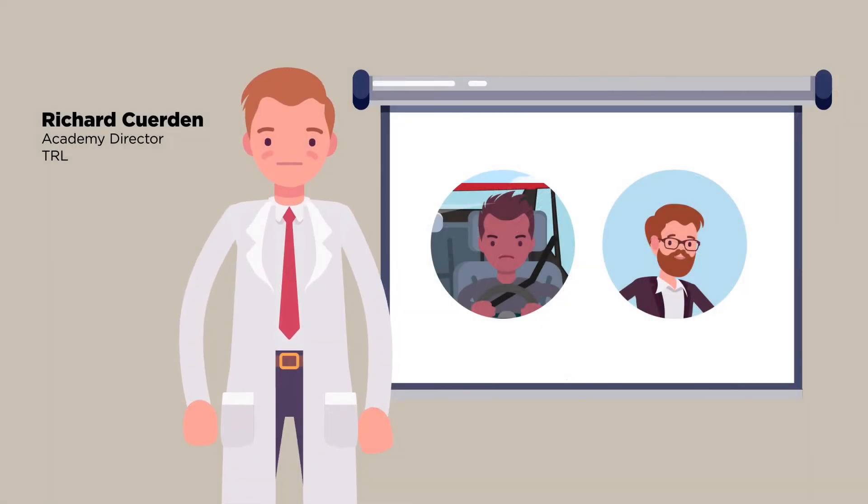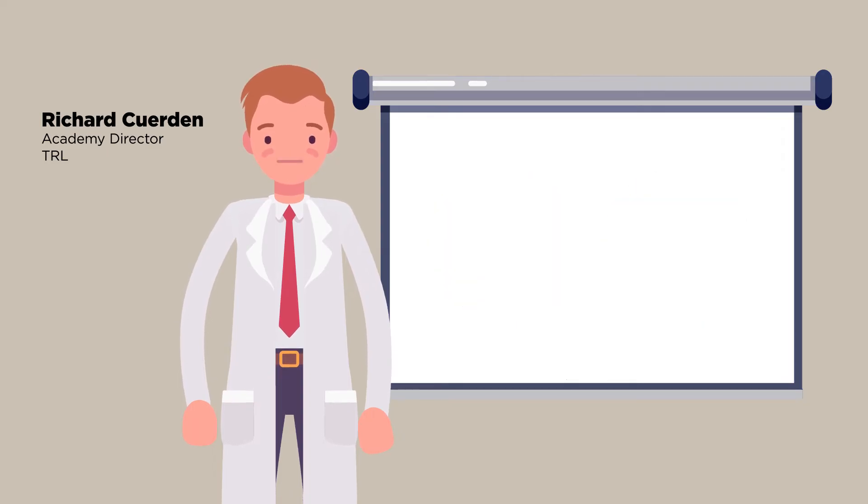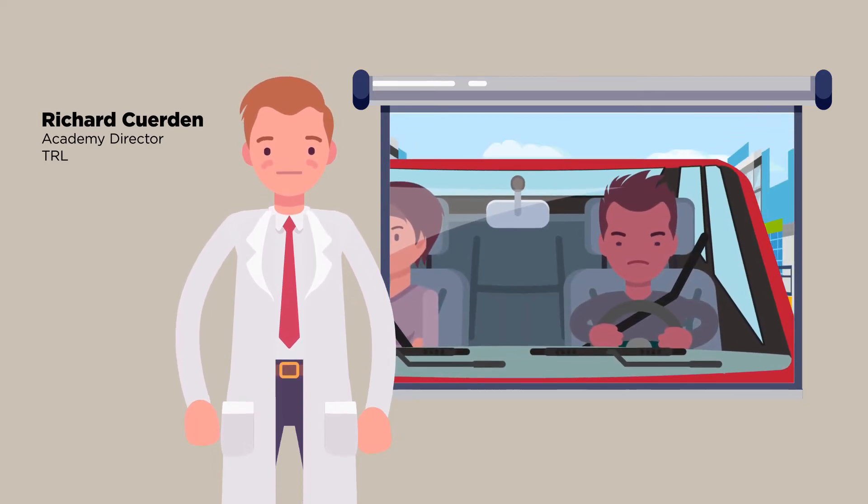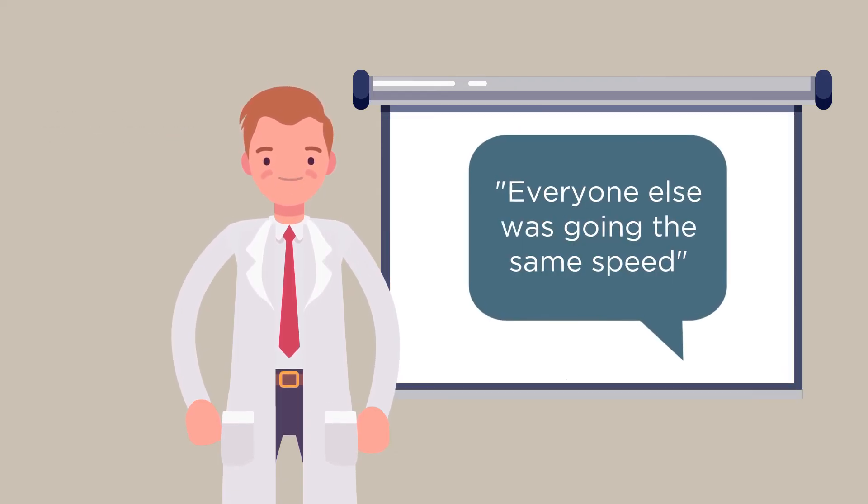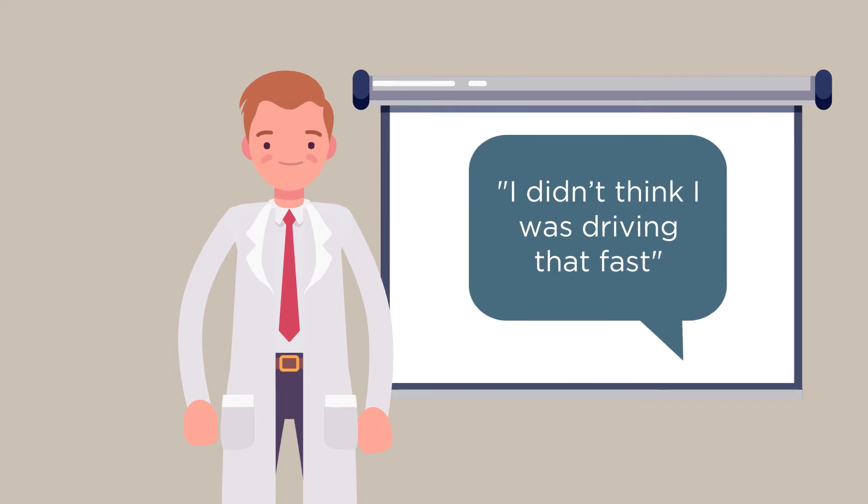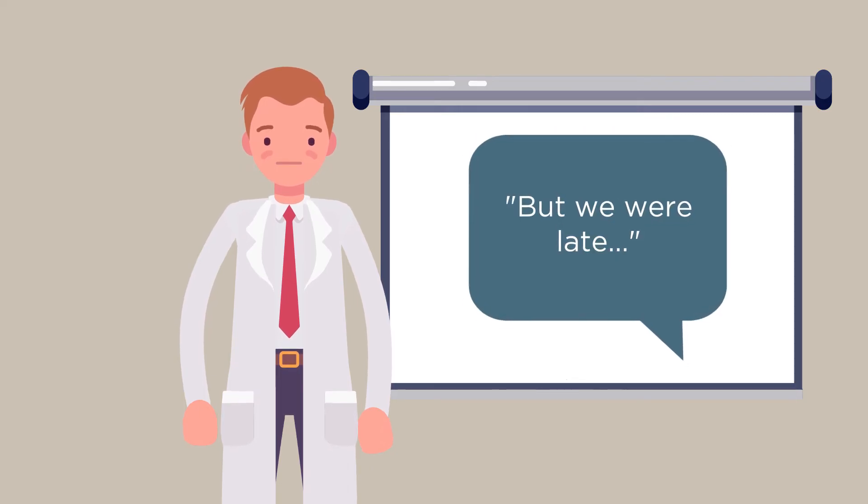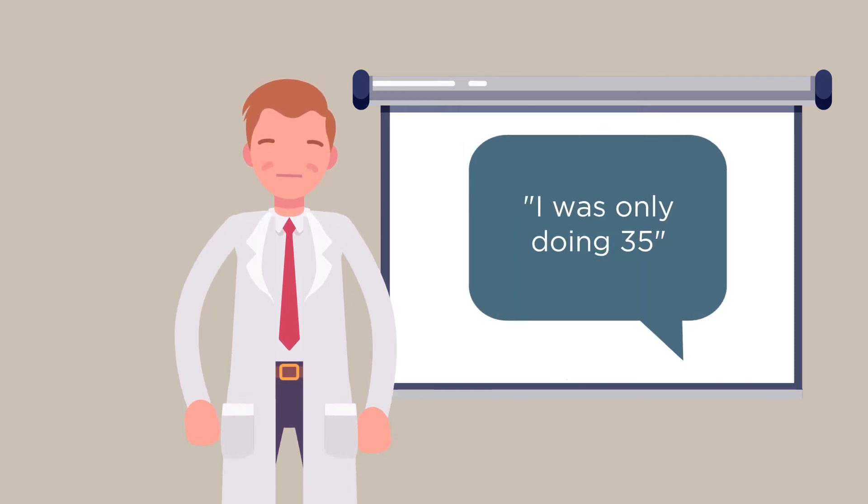Ali and Pete are normal drivers just like you and me and some of the time they travel above the speed limit. They don't speed everywhere and they wouldn't describe themselves as dangerous drivers. Most of us wouldn't either. We might say it's okay for us to speed because we think everyone else is doing it or perhaps we're unaware that we're going too fast.